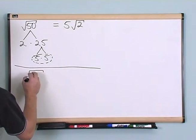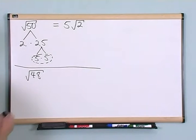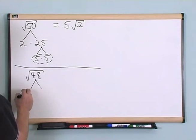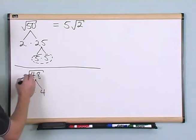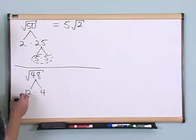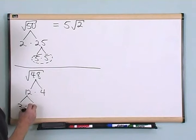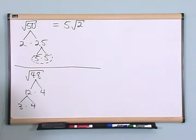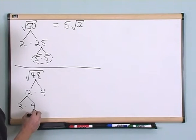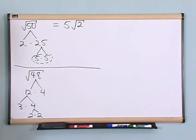What if I have the square root of 48? Okay? I know that 12 times 4 gives me 48. I also know that 3 times 4 gives me 12. And I also know that 2 times 2 gives me 4.